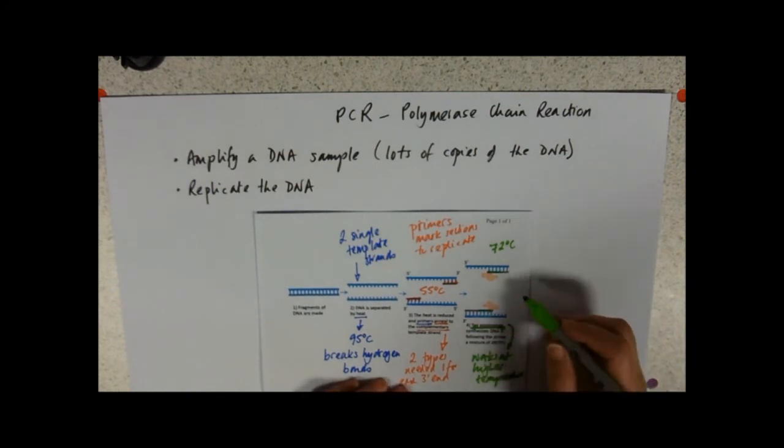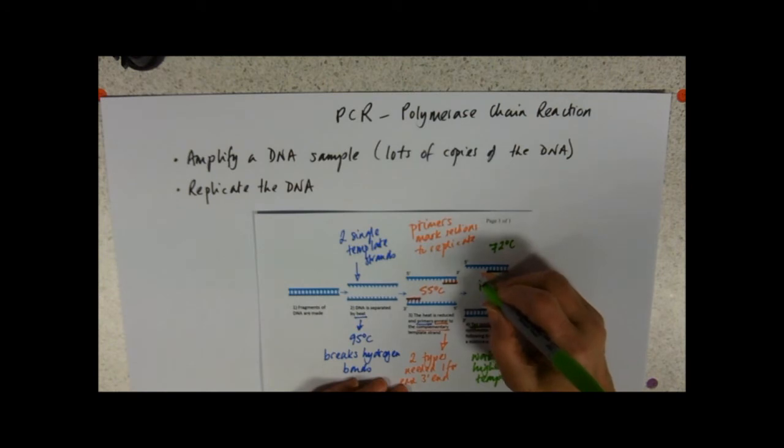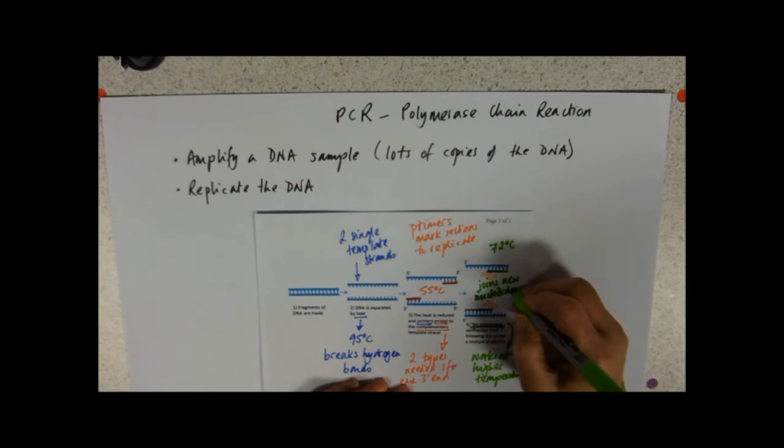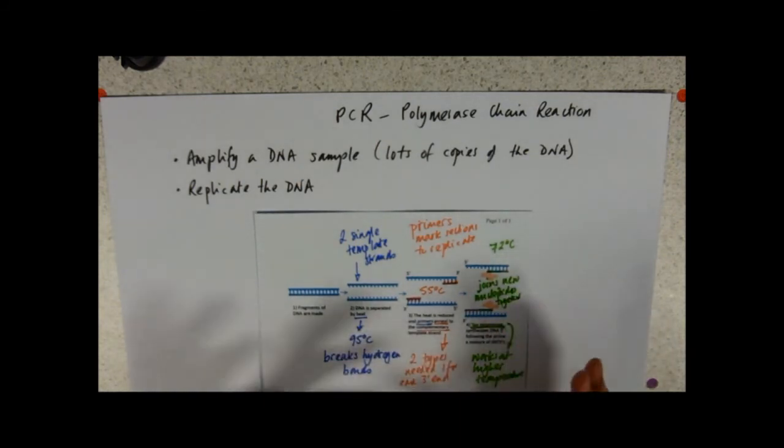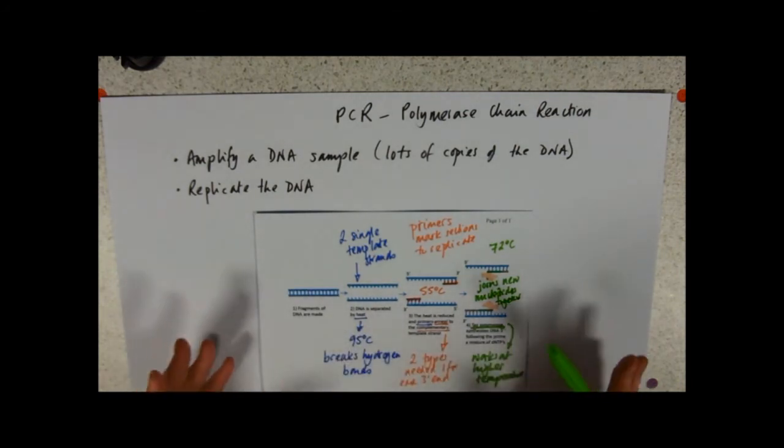It's going to join the individual nucleotides together. So we're also going to need new nucleotides. This is the one that joins new nucleotides together. And again, that's by complementary base pairing. So that's just the same as DNA replication. It's just that we're doing it in a little machine.